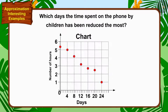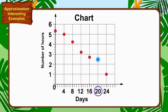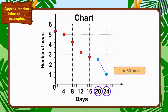Children, can you find the answer to this question by looking at this chart? If you want, you can find a solution by stopping the video. The distance between the heights of the dots of the 20th and 24th days is the highest. Hence, the most time spent on the phone by children between the 20th and 24th days, there is a cut of 1 hour and 30 minutes.